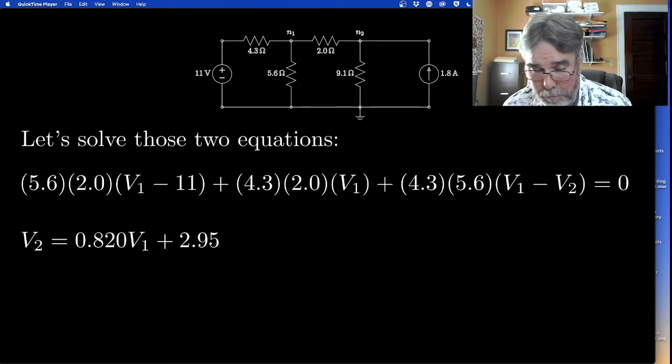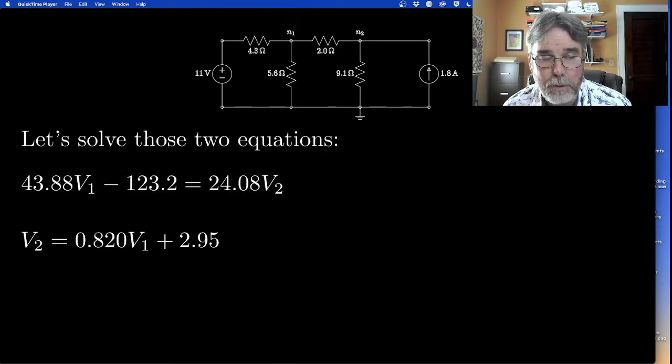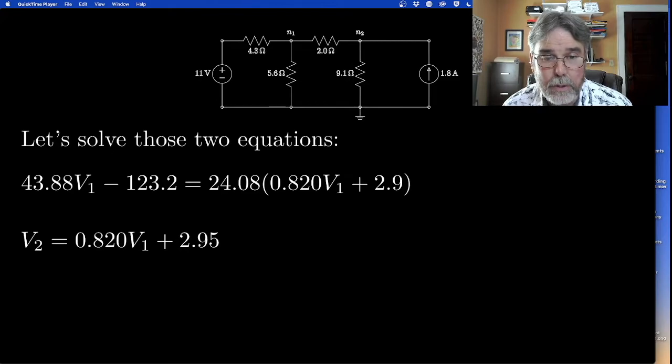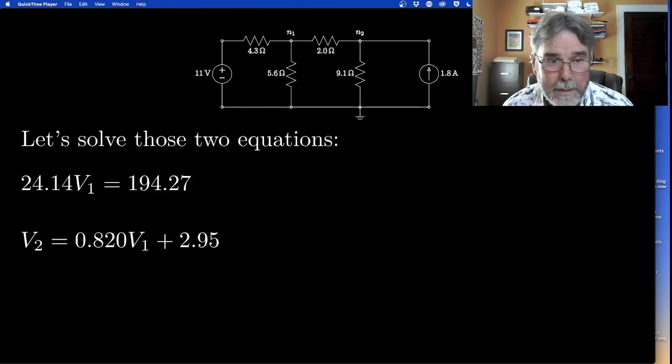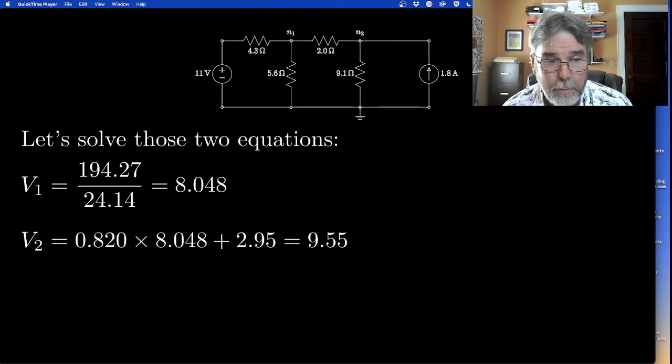And we end up with this guy. So V2 is linearly related to V1. We'll do the same thing with the top equation. First, let's multiply through with all the denominators. Then we'll pull all the V1s and V2s together. Now notice I can substitute V2 with that bottom relationship that has a V1 in it. There we go. And now I have a single equation with V1 as the only unknown. So let's bring the V1s together. Then divide through by the 24.14 and I get a number. So I have a result for V1. Now I'm going to take that result for V1 and put it into the bottom equation. Then I can just multiply through to get V2. That's how you solve those two node equations for the two voltages, 8.048 and 9.55.